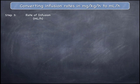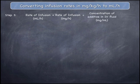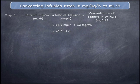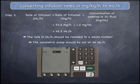The third and final step allows you to calculate the infusion rate in mils per hour by dividing the infusion rate in milligrams per hour by the concentration of the additive in the IV fluid in milligrams per mil. This is 54.6 milligrams per hour divided by 1.2 milligrams per mil, which is 45.5 mils per hour. The infusion rate should be rounded to a whole number, and therefore the volumetric pump should be set to deliver an infusion rate of 46 mils per hour.